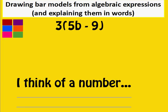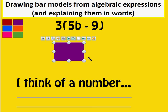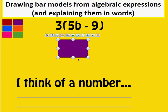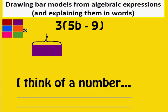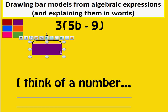And final example, three brackets, five b take away nine. Let's use purple. Purple is going to be our unknown number. It's going to be b. Okay, so this is b. And then we need five of those. Let's just bring that more over there. Okay, five of them.